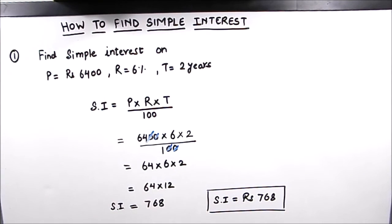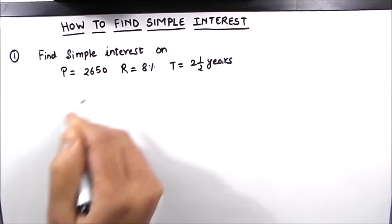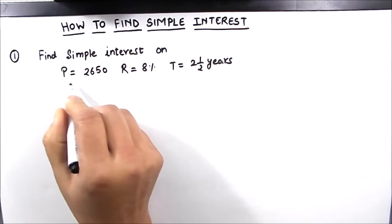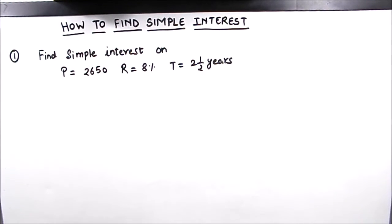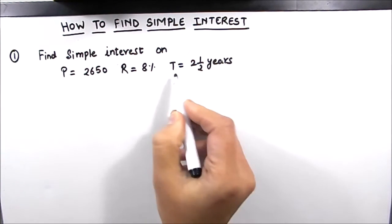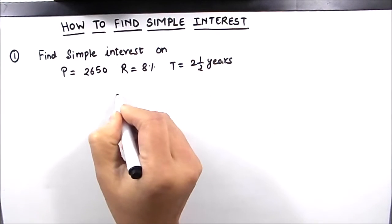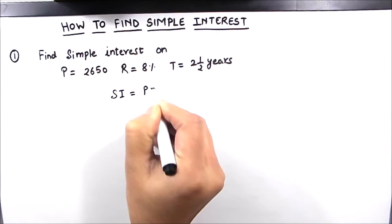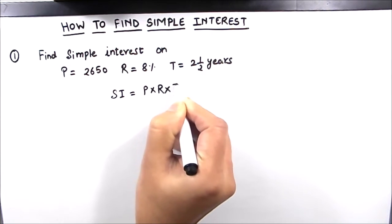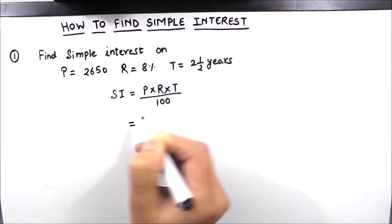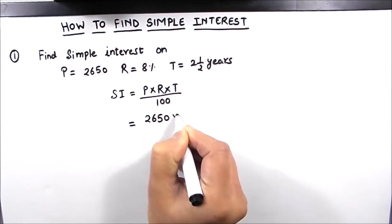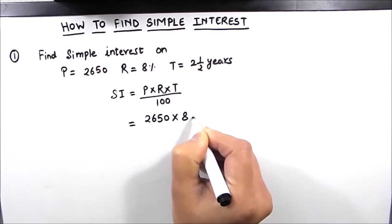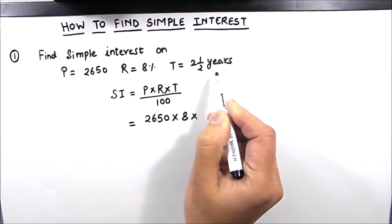Let us solve one more example. So in our second example we have been given principal amount as 2650 rupees, rate of interest is eight percent, and time is two and a half years. So we will apply the formula here which is P times R times T divided by 100. Principal amount is 2650, rate of interest is 8%, and time is 2 and a half years.